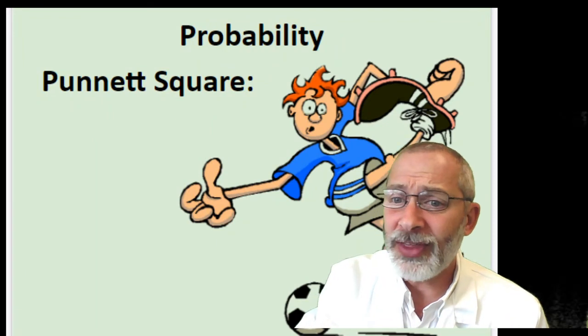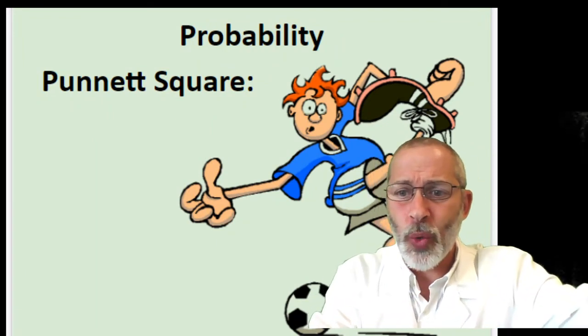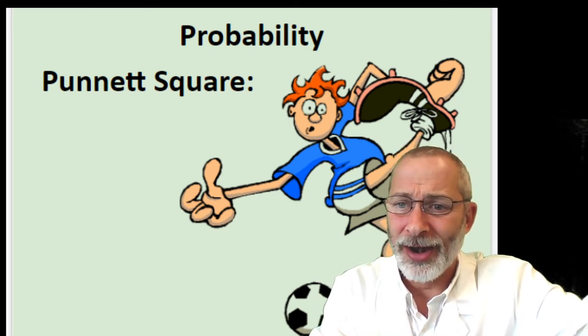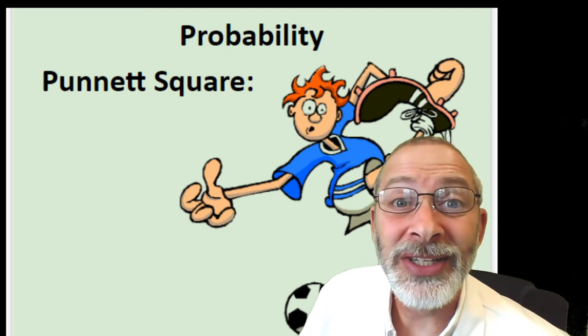Hello, students. Today we're going to have some fun with a genetics tool that I left you yesterday with a cliffhanger trying to figure out what this tool was. I left you with a picture that looked like this. The tool is called a Punnett square — a Punnett square — and the Punnett square has nothing to do with punting balls.